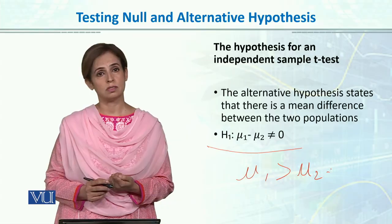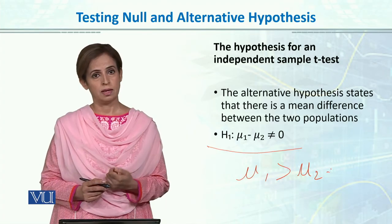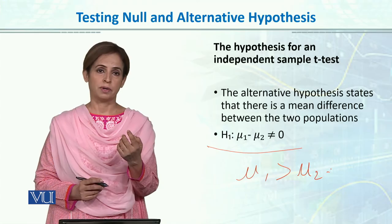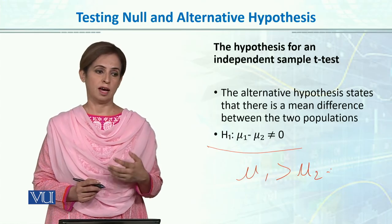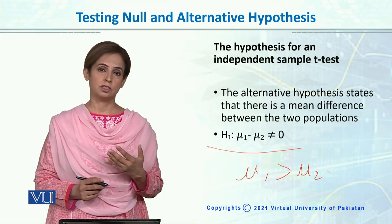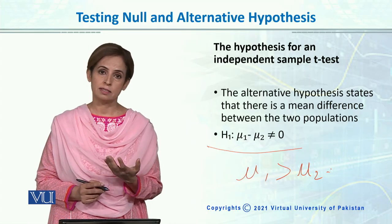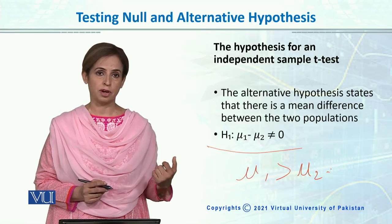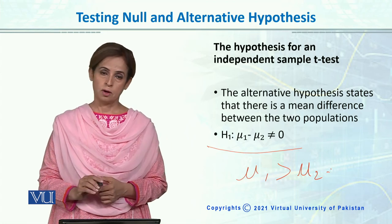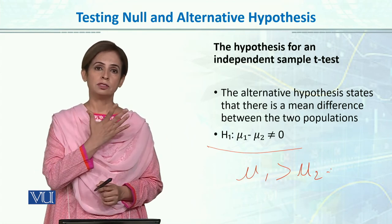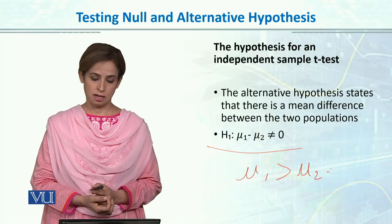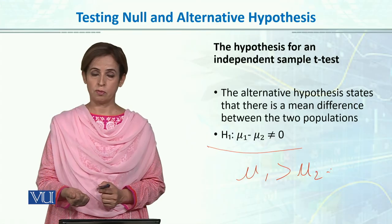So where does the alternative hypothesis come from? Usually, just as you write a manuscript and do research, you collect data and review your literature. Our alternative hypothesis comes from our theoretical framework, previous research, and past evidence — that is how we formulate it.